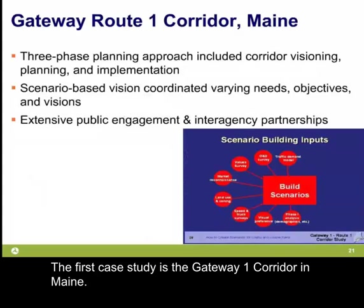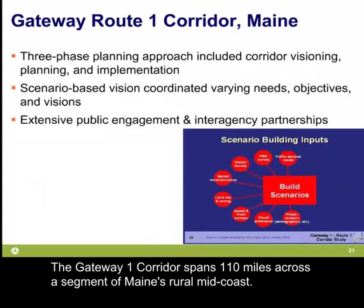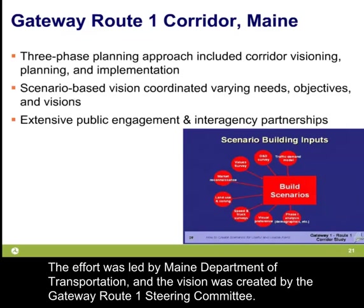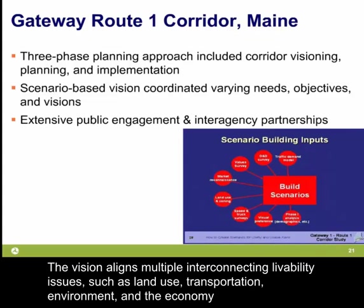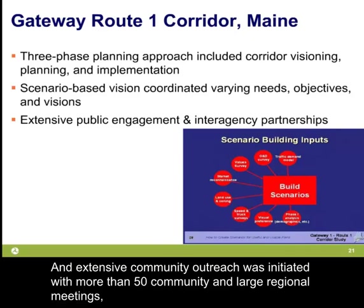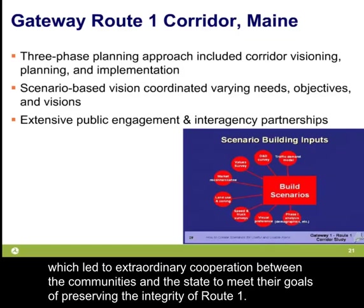The first case study is the Gateway One Corridor in Maine. This corridor spans 110 miles across a segment of Maine's rural mid-coast and is an example of a larger-scale, corridor-based visioning initiative. Led by the Maine Department of Transportation, the vision was created by the Gateway Route 1 Steering Committee. The vision aligns multiple interconnecting livability issues such as land use, transportation, environment, and the economy into a cohesive development and investment strategy. An extensive community outreach process was initiated with more than 50 communities and large regional meetings, leading to extraordinary cooperation between communities and the state.